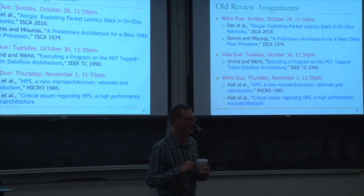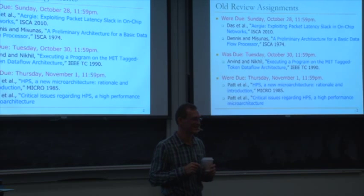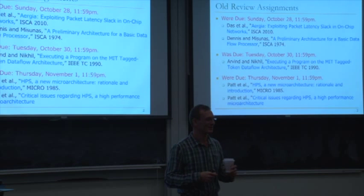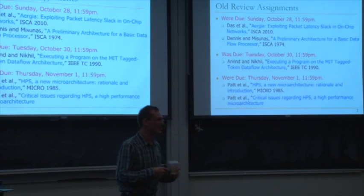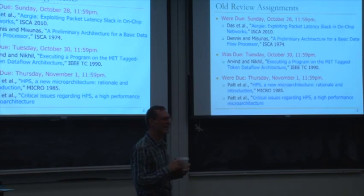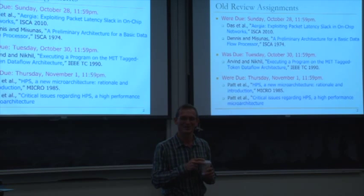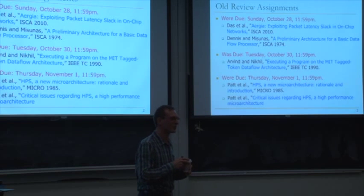VAX was perhaps the most complicated architecture, even more complicated than x86. It had more than 300 instructions, definitely more than 300, and around 23 addressing modes or more.